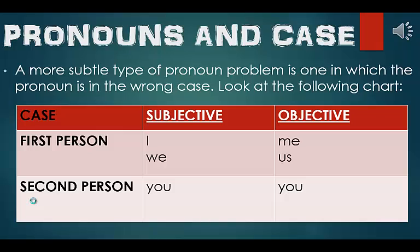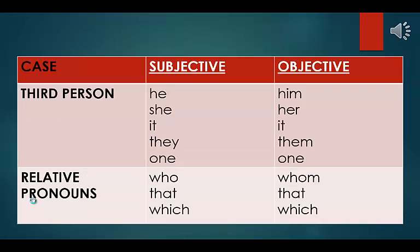Pronouns in case. A more subtle type of pronoun problem is one in which the pronoun is in the wrong case. In first person: subjective I, objective me; subjective we, objective us. In second person: subjective you, objective you. In third person: subjective he, objective him; subjective she, objective her; subjective it, objective it; subjective they, objective them; subjective one, objective one. For relative pronouns: subjective who, objective whom; subjective that, objective that; subjective which, objective which.